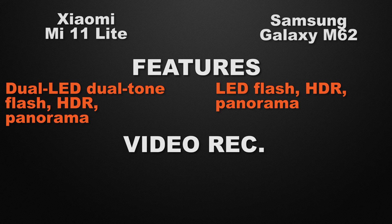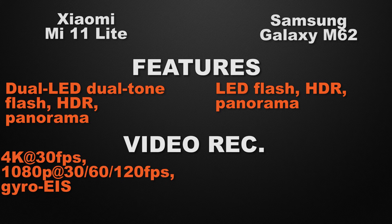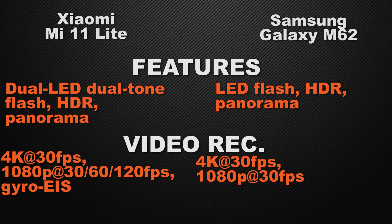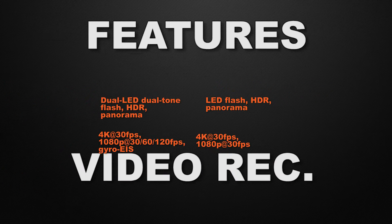For video recording, the 11 Lite can shoot 4K video at max 30fps and Full HD video at max 120fps with gyro electronic image stabilization. The M62 can record 4K video at max 30fps and Full HD video at max 30fps. So without a doubt the winner here is the 11 Lite because it has gyro electronic image stabilization which can stabilize your footage.